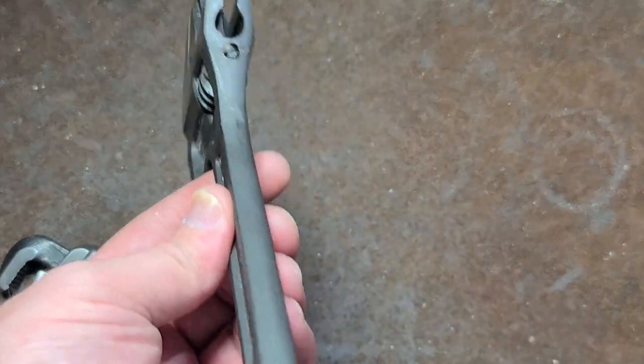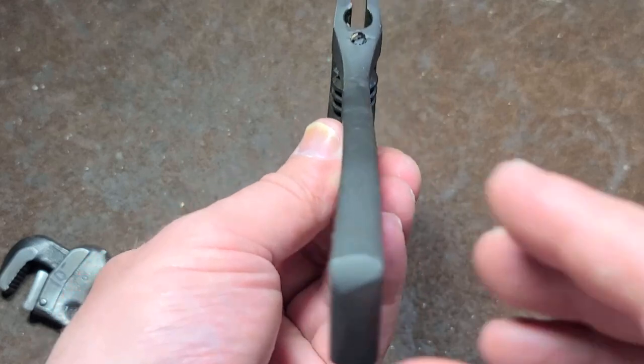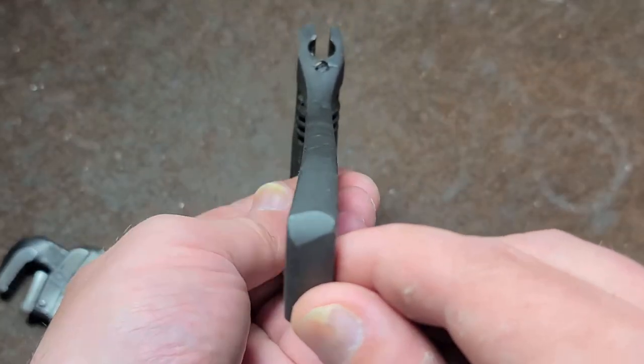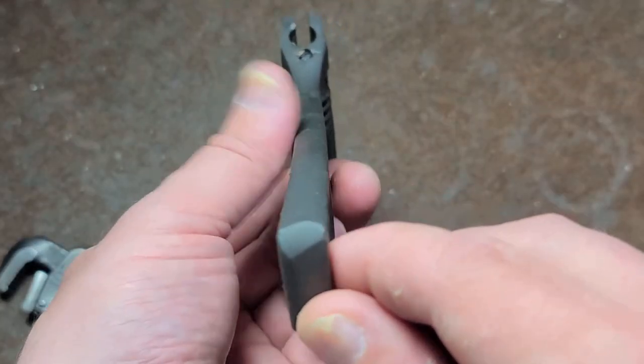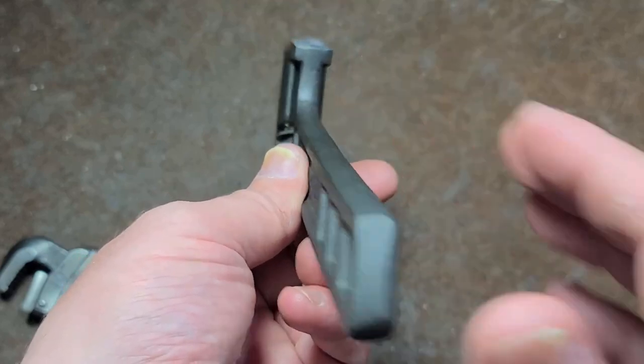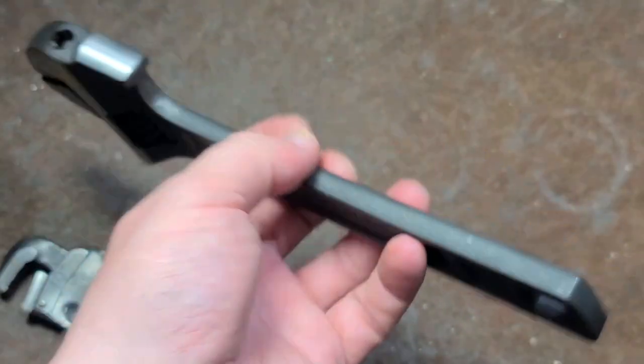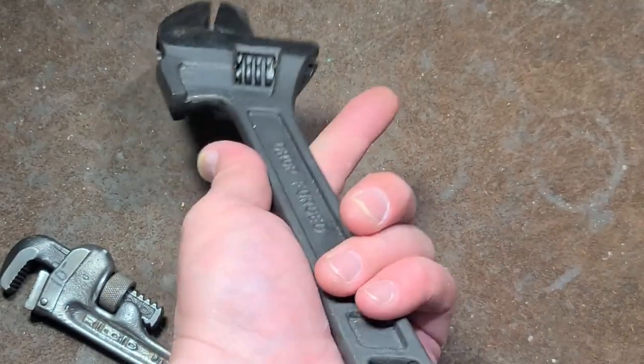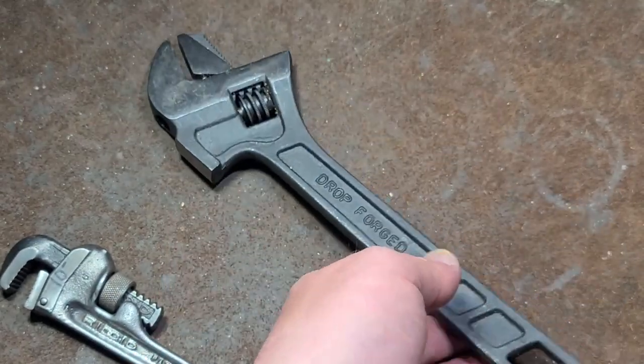One thing I rarely even talk about because it's really never an issue is the straightness of the handles. But we can see the handle on this is substantially warped, which is actually a pretty rare sight on an adjustable wrench. Usually the handles are really darn straight. So really it's a piece of junk.